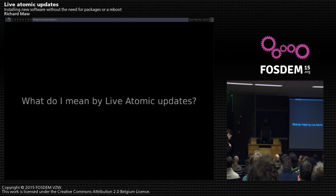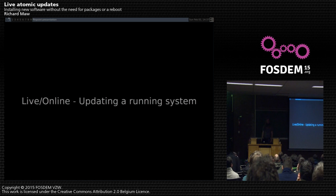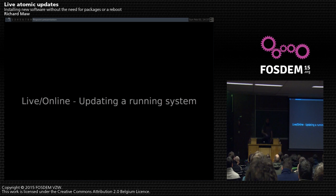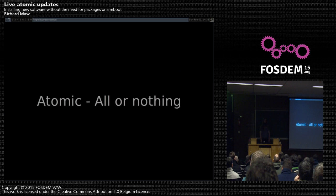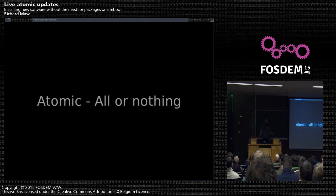First, what do I mean by live atomic updates? A live update means updating a system while it's running, so you don't have any service outage — you serve your website without getting a connection failure because a request came in while you were updating the server. Atomic is more difficult to explain. You go from one version of the installed system to the other in one go, so you get either entirely the old version or entirely the new version, not intermediate states where you've installed this file, removed that file, or changed a file partially.